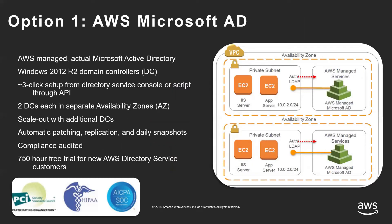The first is AWS Managed AD. This is a fully managed solution offered by AWS. It runs on 2012 R2 domain controllers. When you launch these, AWS will provision two domain controllers, one in each of two separate availability zones, and you can scale out to additional domain controllers as needed. AWS takes care of all routine maintenance such as patching, replication, daily snapshots, and compliance audits. All you have to do is control your root policies, permissions, and user provisioning — AWS takes care of everything else.